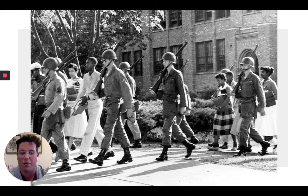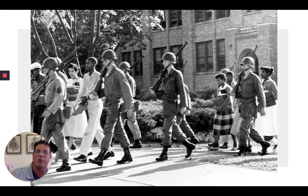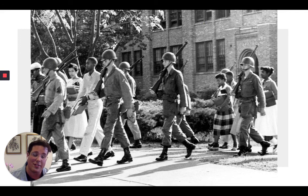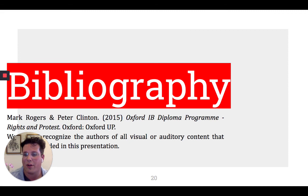However, Governor Faubus closed all four high schools in Little Rock the same day — a move later approved by Little Rock voters — and the schools remained closed for the entire year. It wasn't until the 1959-1960 school year that supervised integration gradually continued. We see the gradualizing slowly but surely of the civil rights movement, but there was a lot of retribution from local citizens, the state government, and the state police. Thank you to the work of Mark Rogers and Peter Clinton, and we recognize the authors of all the visual and auditory content added into this presentation.